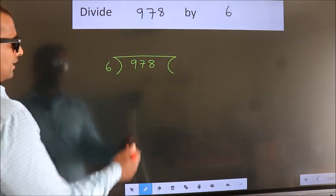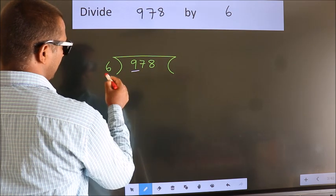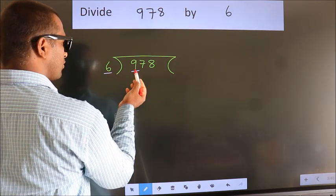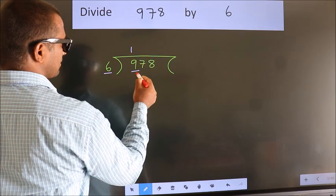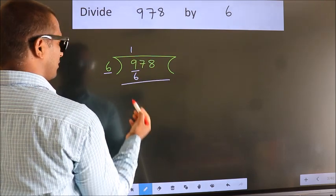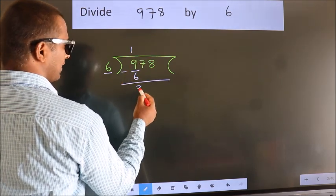Next, here we have 9, here 6. A number close to 9 in the 6 table is 6 once, 6. Now we should subtract. We get 3.